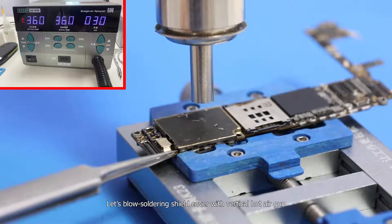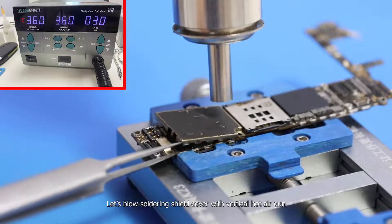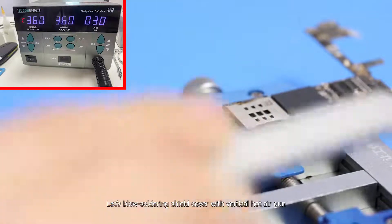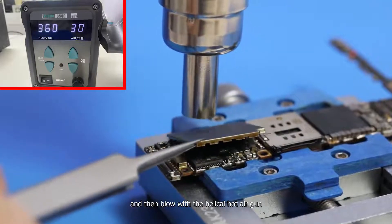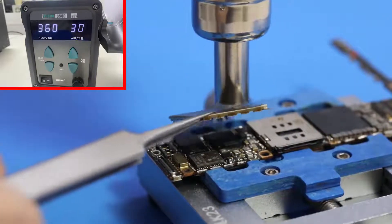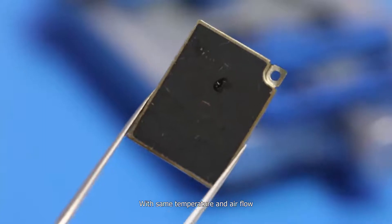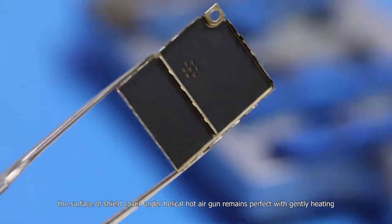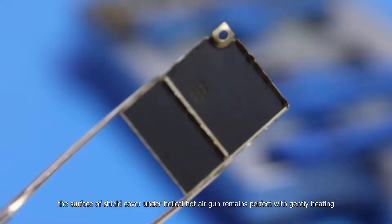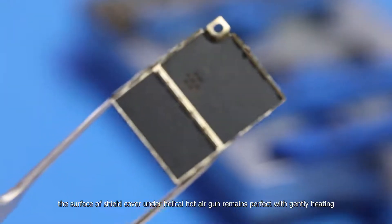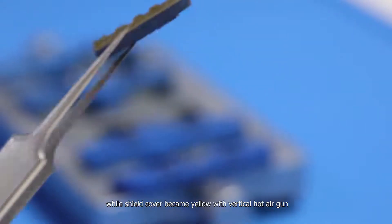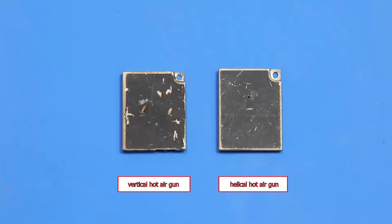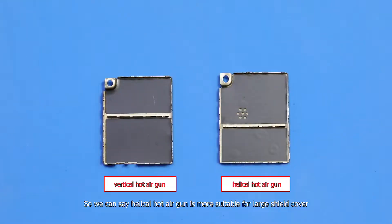Let's blow soldering shield cover with vertical hot air gun, and then blow with helical hot air gun. With same temperature and airflow, the surface of shield cover with helical hot air gun remains perfect with gentle heating. While shield cover becomes yellow with vertical hot air gun. So we can say helical hot air gun is more suitable for large shield cover.